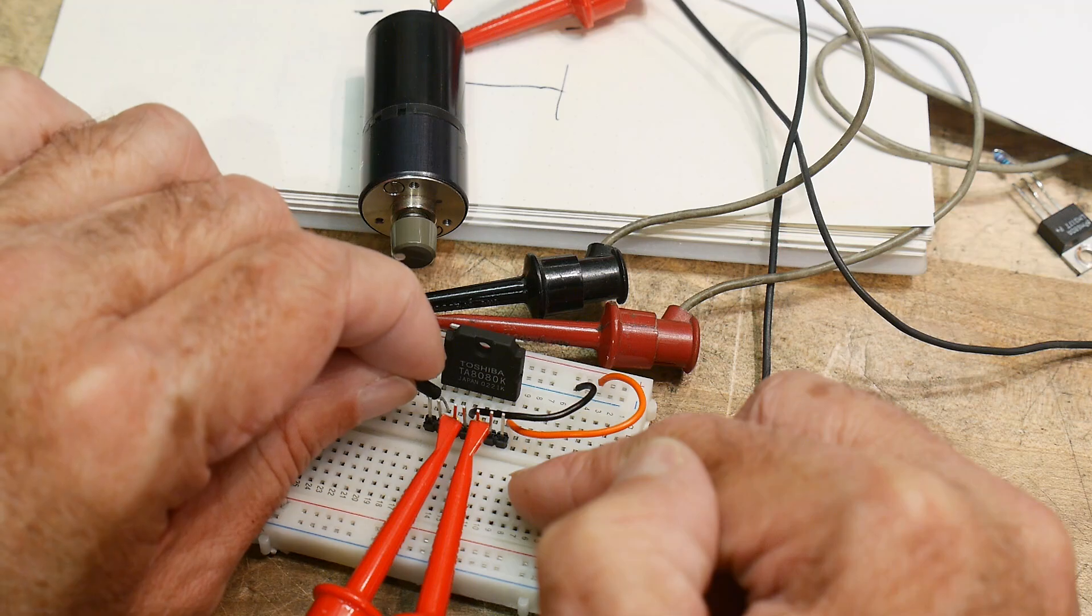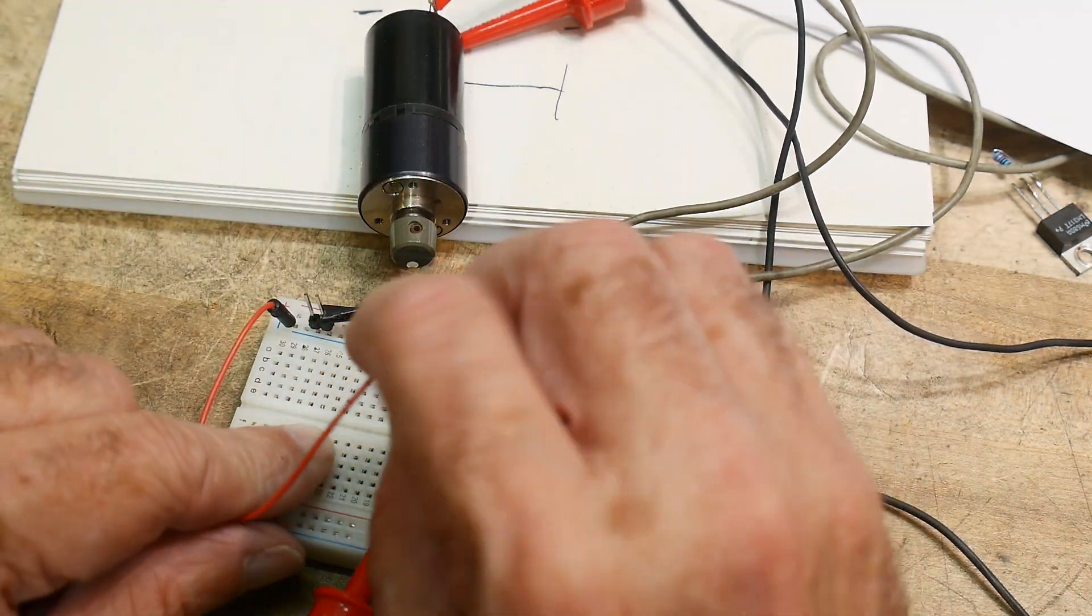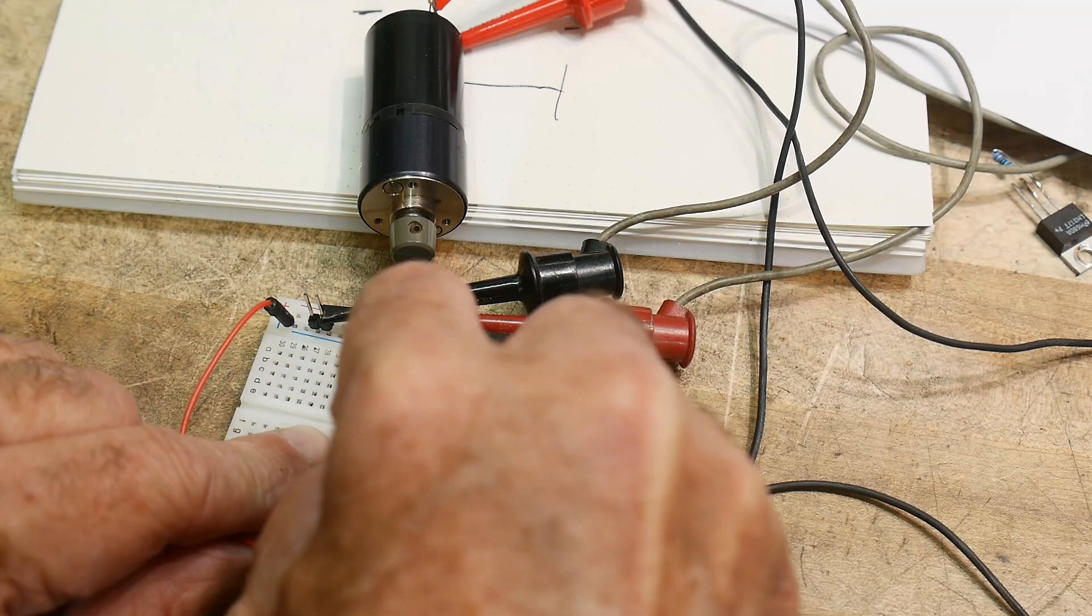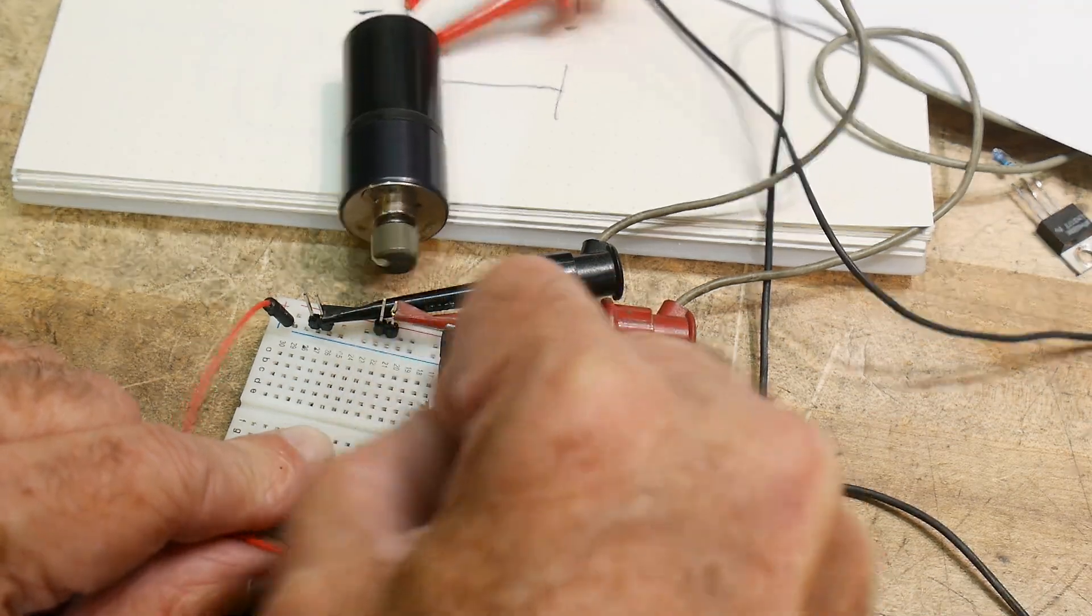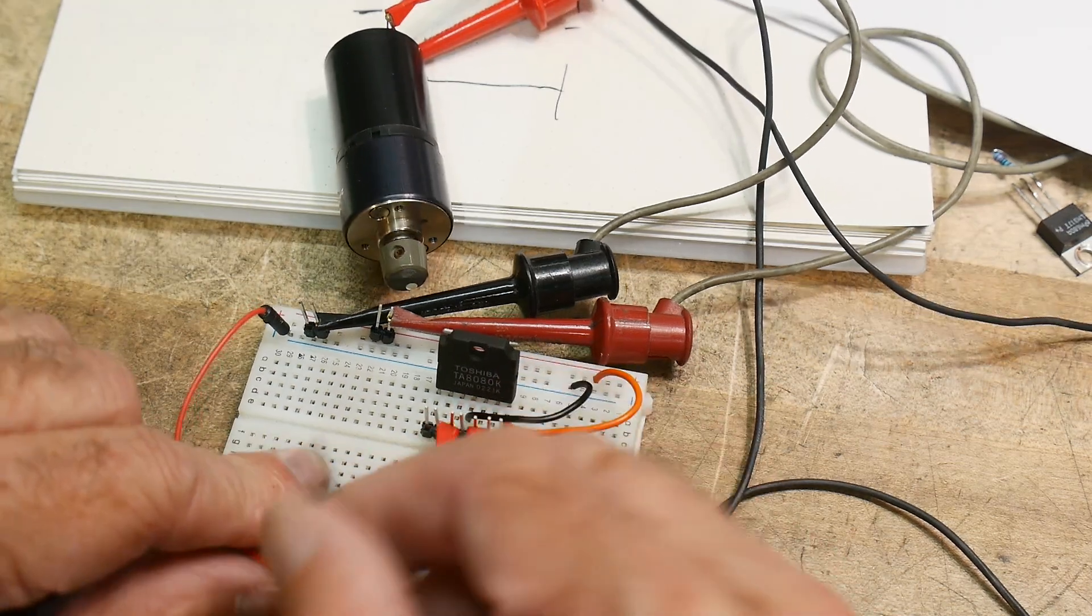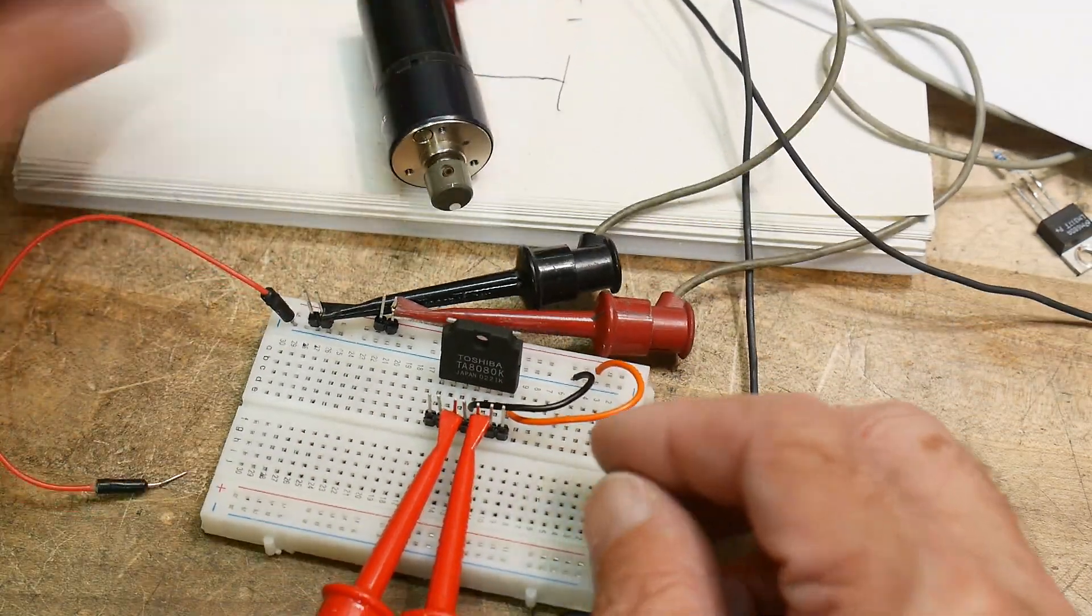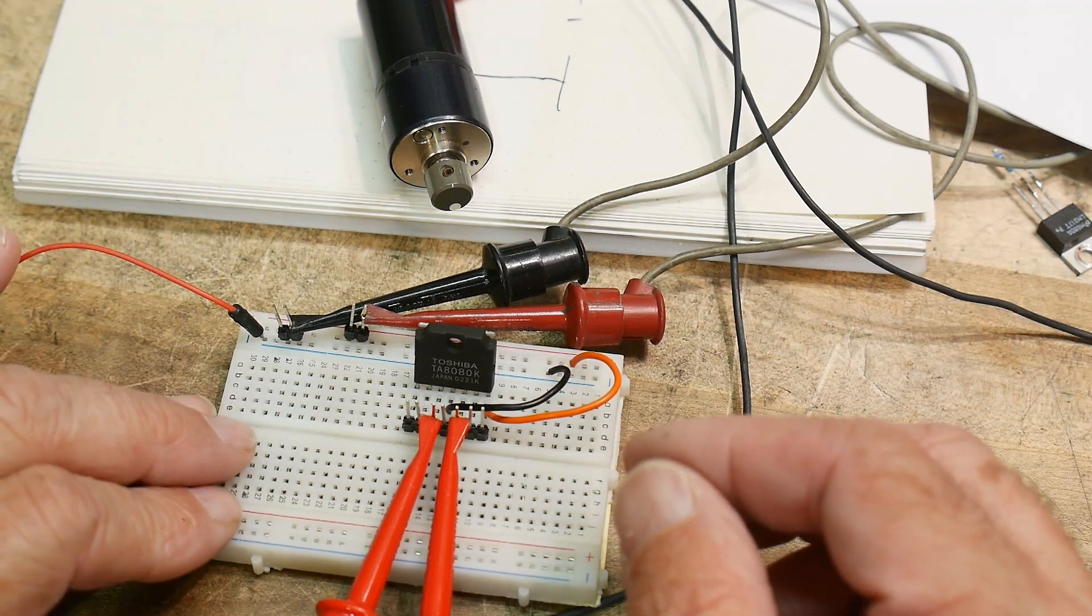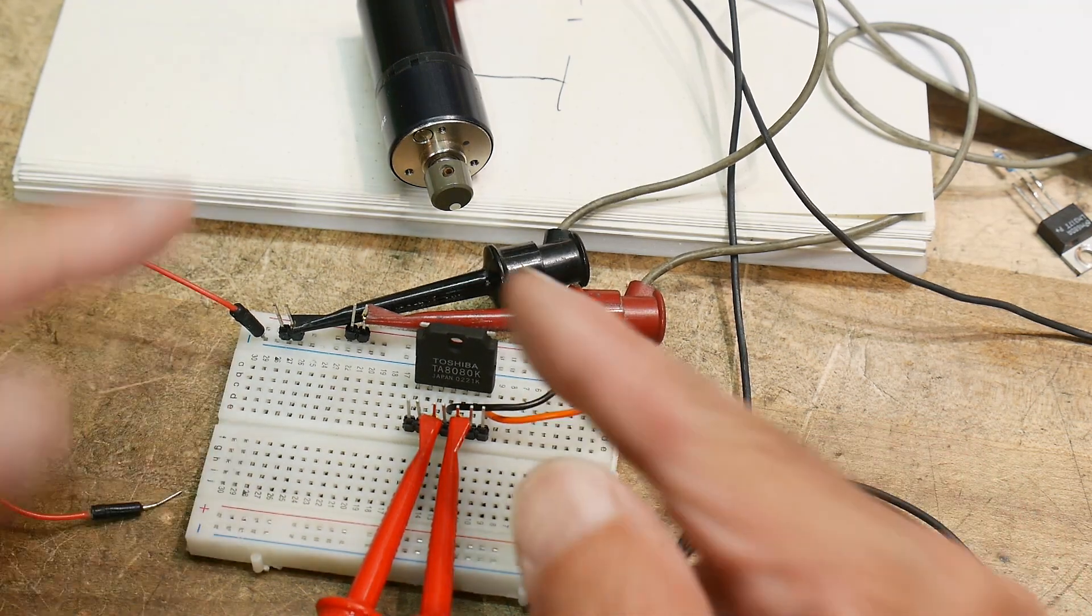But otherwise it's kind of a go no go, there's no speed control, although you can do speed control, you can pulse modulate. I can try to pulse modulate my finger. Let's see if we can hook up a 555 and make it go slower.